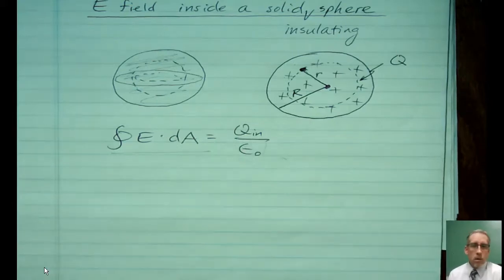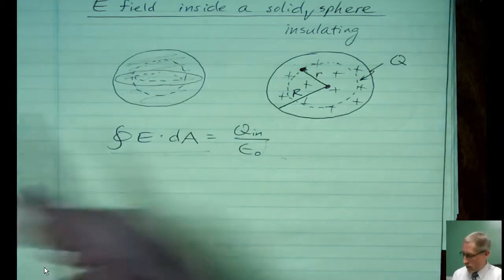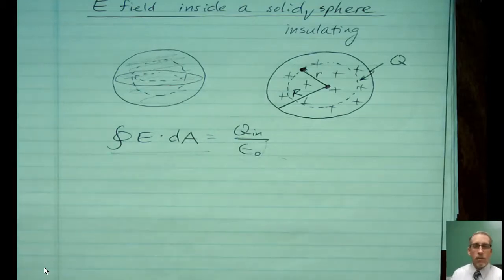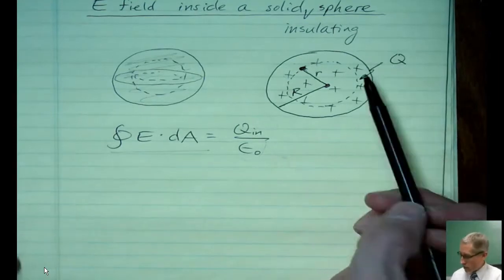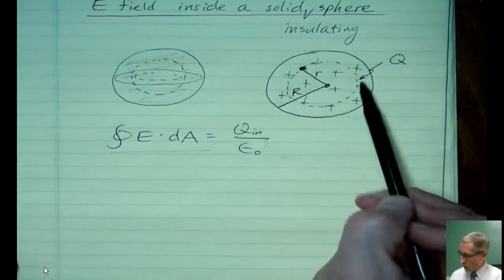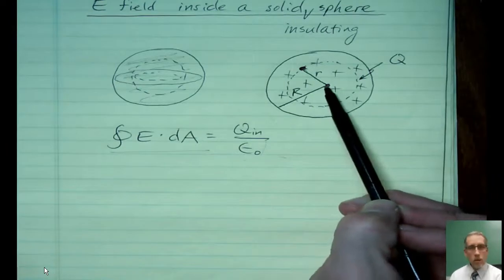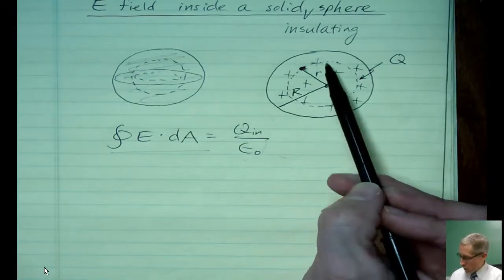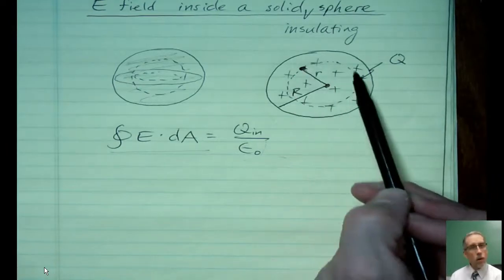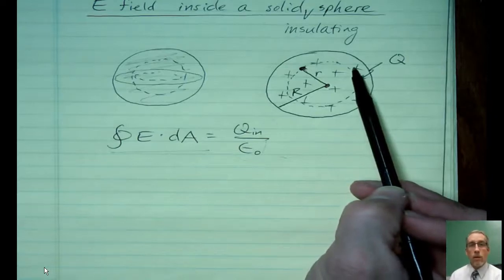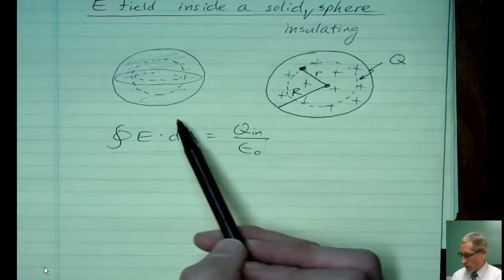Now when we do Gauss's Law, it always looks scary like, oh no, we've got to do this fancy calculus. But the whole idea of doing it is we only do it when the symmetry is so high that we don't really need to do the calculus. So here's the two things that are important. First, I've centered the Gaussian sphere on the center. That means no matter where I go on my Gaussian sphere, I would expect that the electric field would be the same. Whatever that is, it's going to be the same. And that's kind of what I'm looking for.